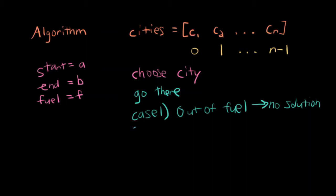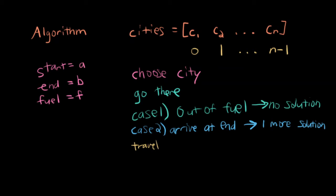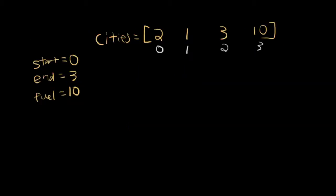Another thing that could happen, case 2, is I could be at my ending city. I could have arrived where I want to be. If that's the case, then I have one more solution. And if I'm in case 2, as long as I'm not in case 1, then I want to continue going. Even if I've arrived at my destination, I want to keep going because I still might have more fuel. So I want to, from here now, with my updated fuel, travel to every remaining city except myself. I don't want to go back to myself. Let's look at this algorithm in action now.